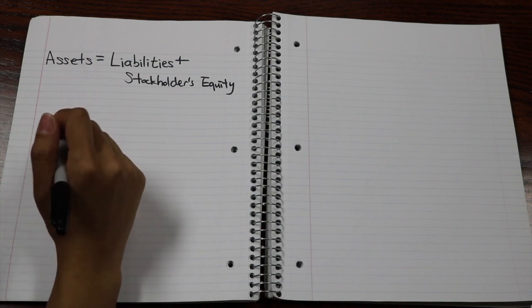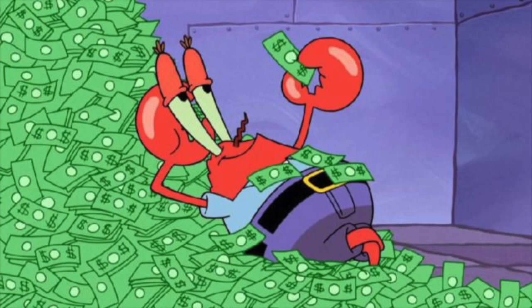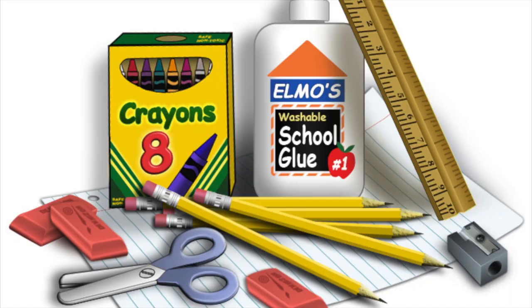We'll begin with simple definitions today to be expanded in later videos. Assets are resources owned by a company that are expected to provide a future benefit that can be measured and expressed in dollars. The most common asset is cash, but there are others like supplies and buildings.